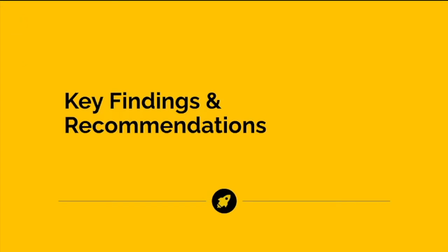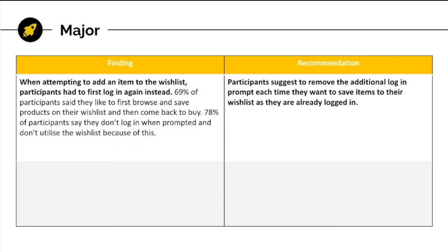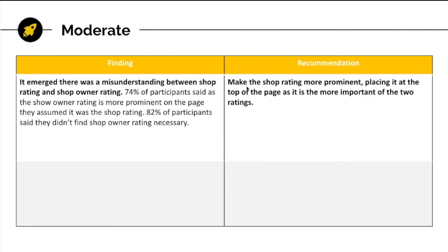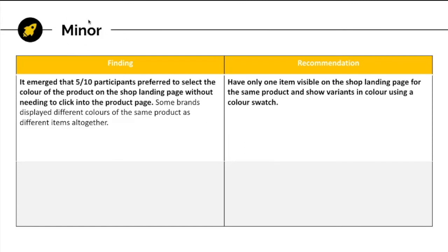Another key section in your report is key findings and recommendations. After analyzing your usability testing research, create a list of recommendations and action items based on findings. Use action words like make, have, and do for actionability. These items should be consistent with the feedback you've gathered from users during testing. Separate them into categories — for example, major, moderate, and minor — to help prioritize.